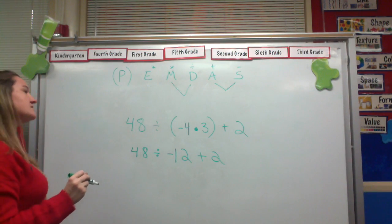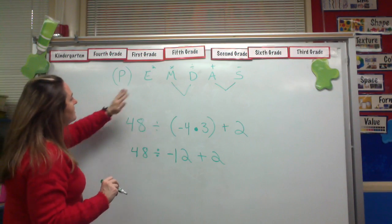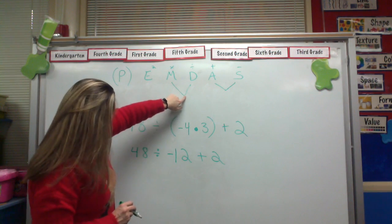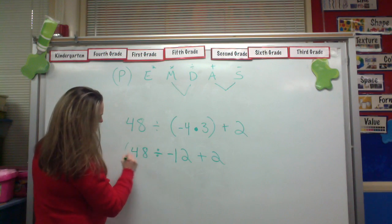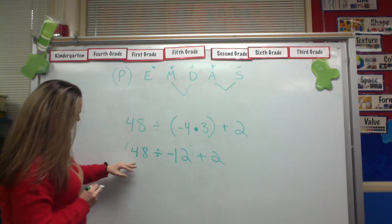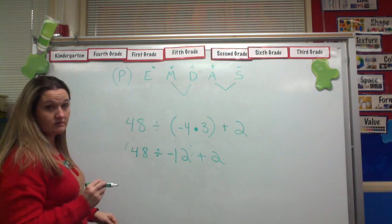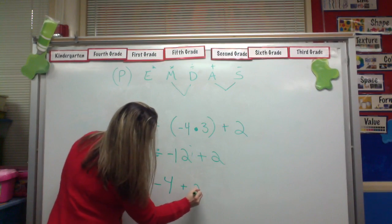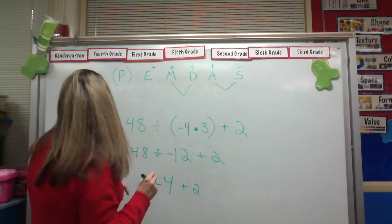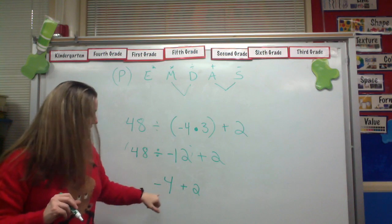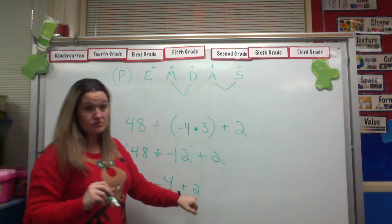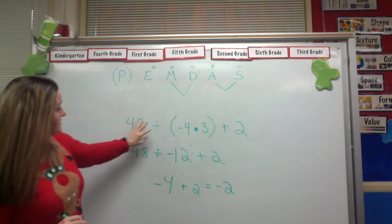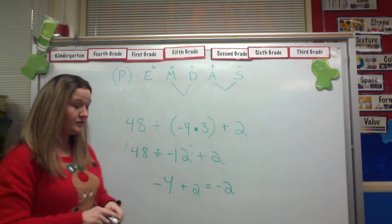So I've done that step. Let's keep going. Are there any exponents? No. Multiplication or division? Yeah, I've got division right here. So that's this right here. So let's go ahead and divide 48 divided by negative 12. That's negative 4. And then we still have the plus 2. And now we're ready for our last step, which is the addition. Negative 4 plus 2 is negative 2 is my answer to this equation using the correct order of operations.